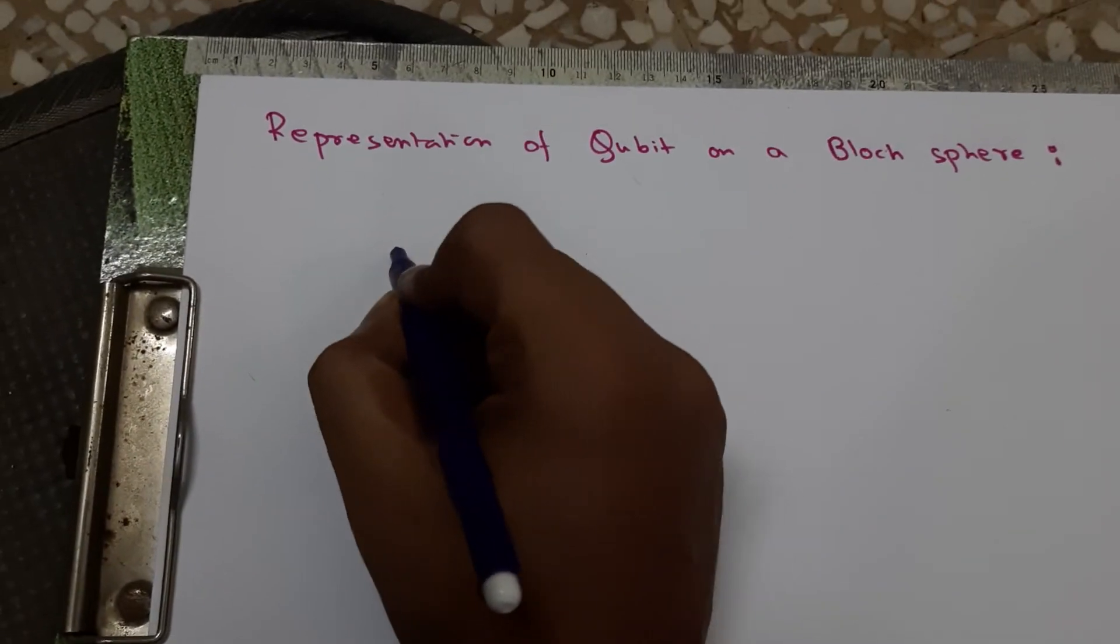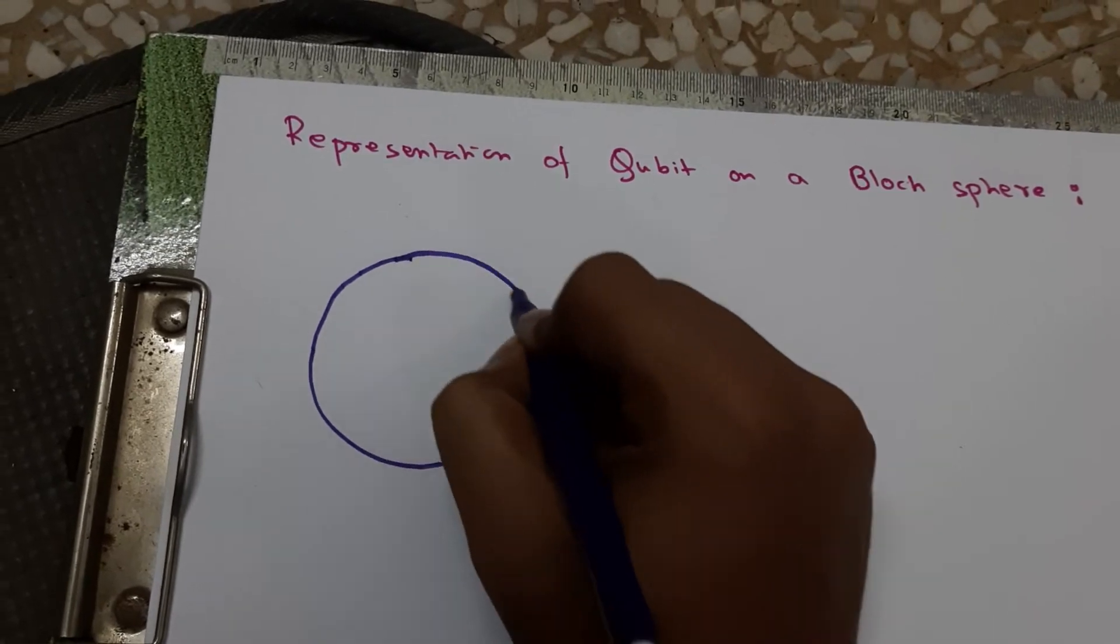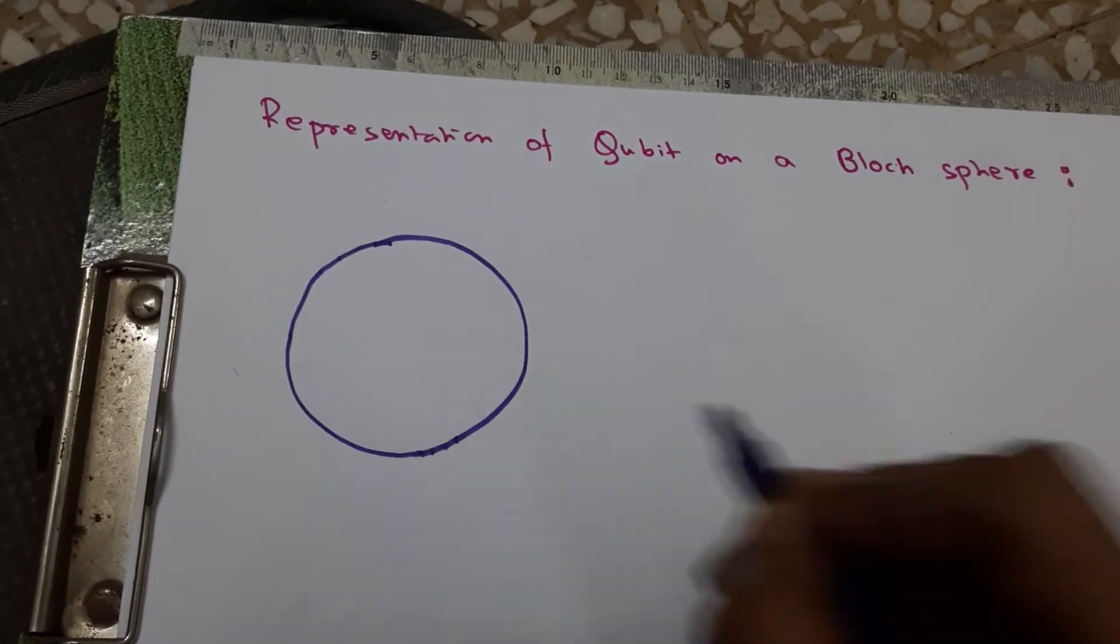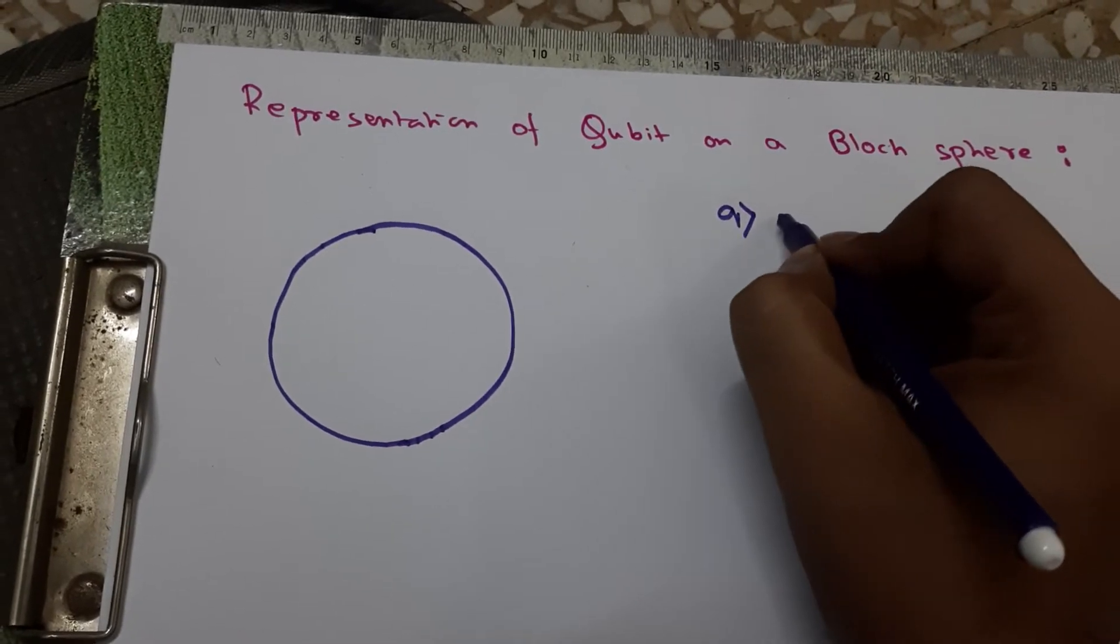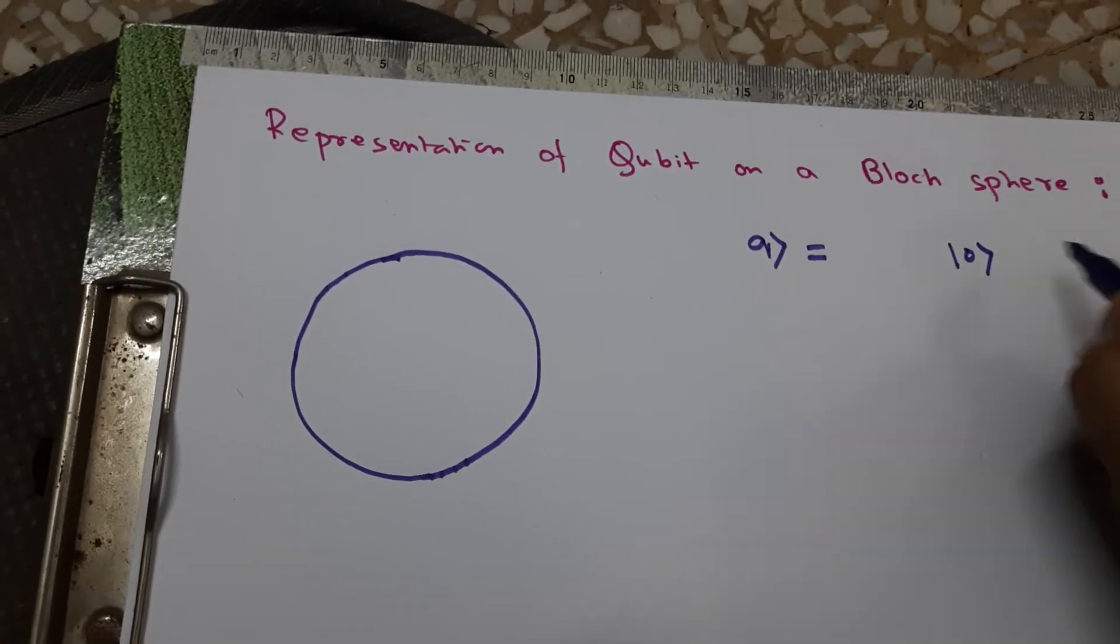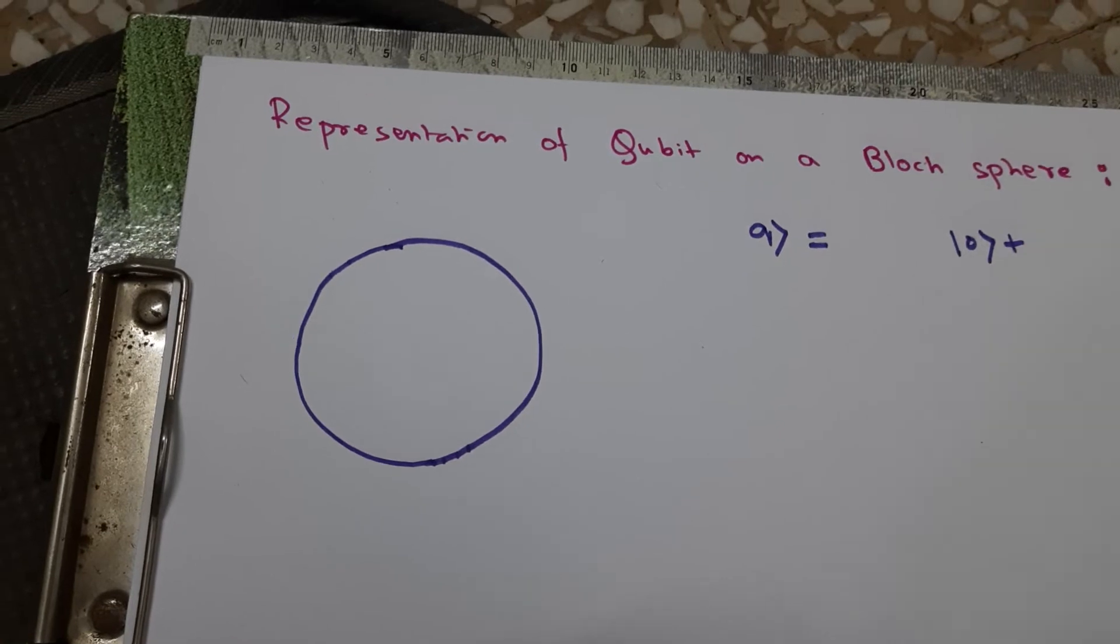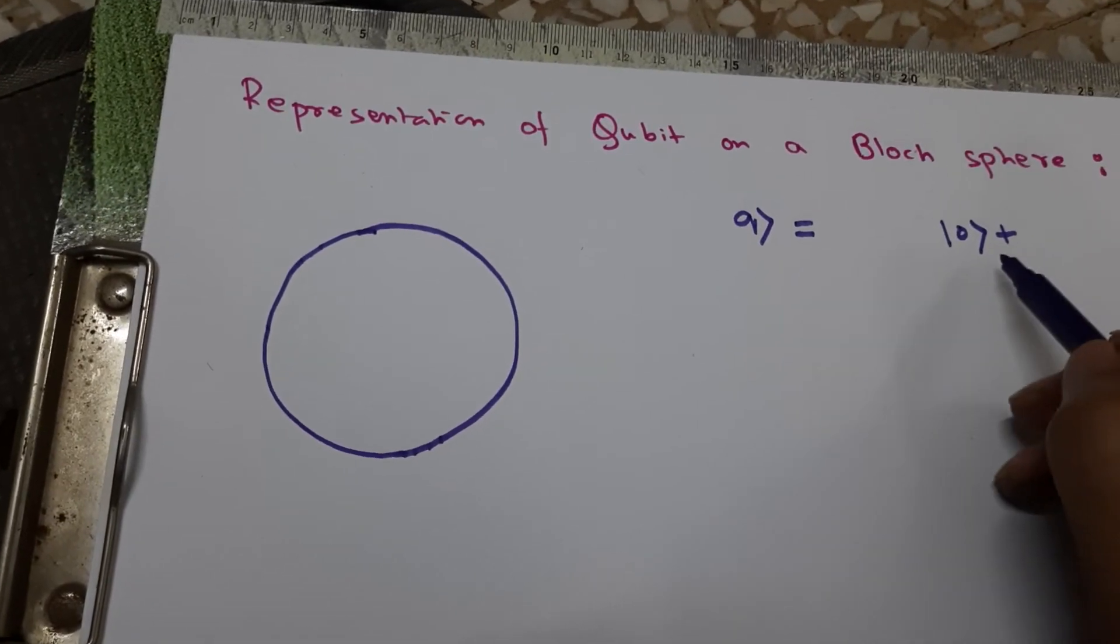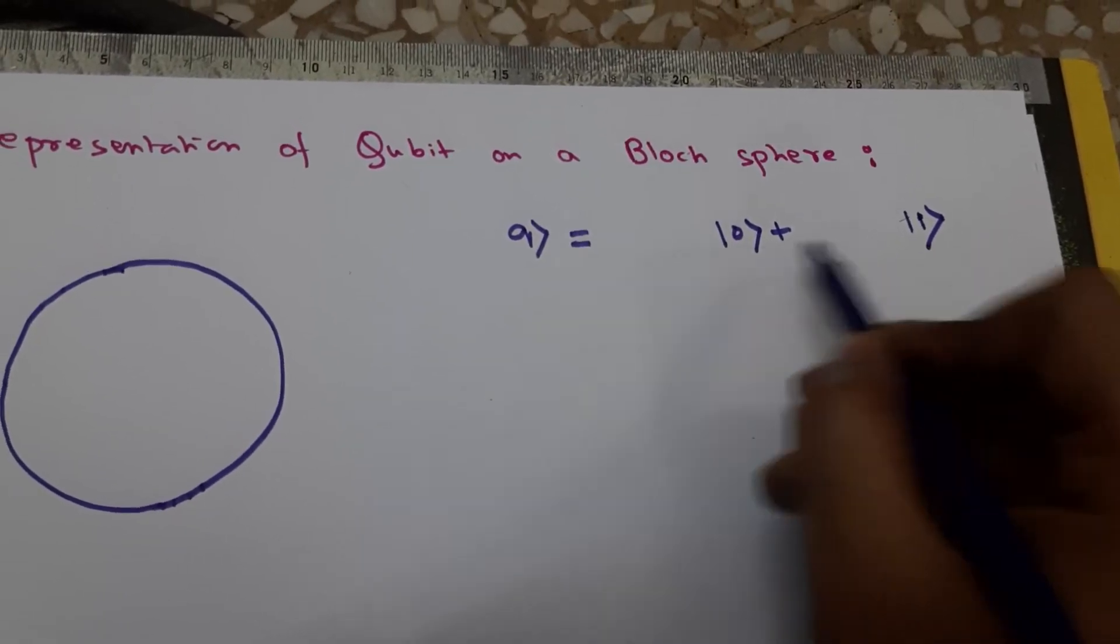Let's draw a sphere. As we have already seen, a qubit state is a superposition state of zero and one, but it is not simply just zero and one. There will be some coefficients here.